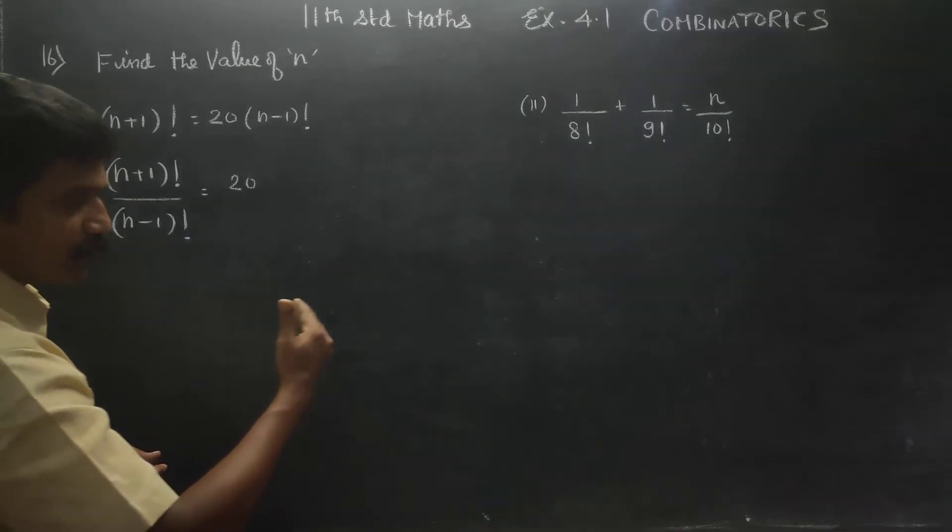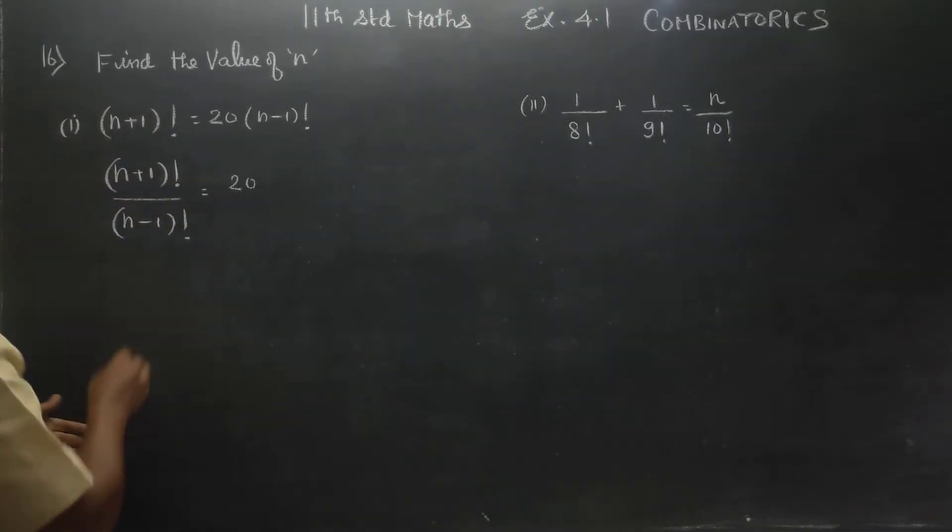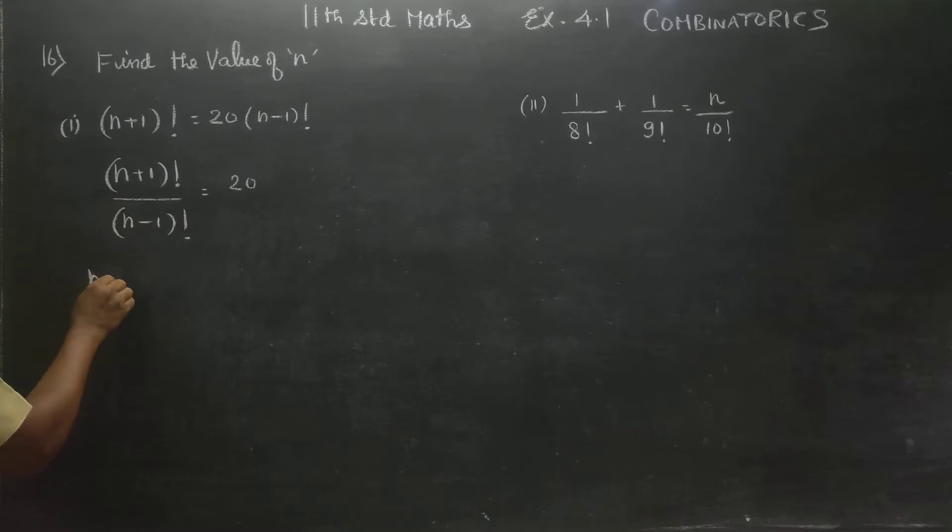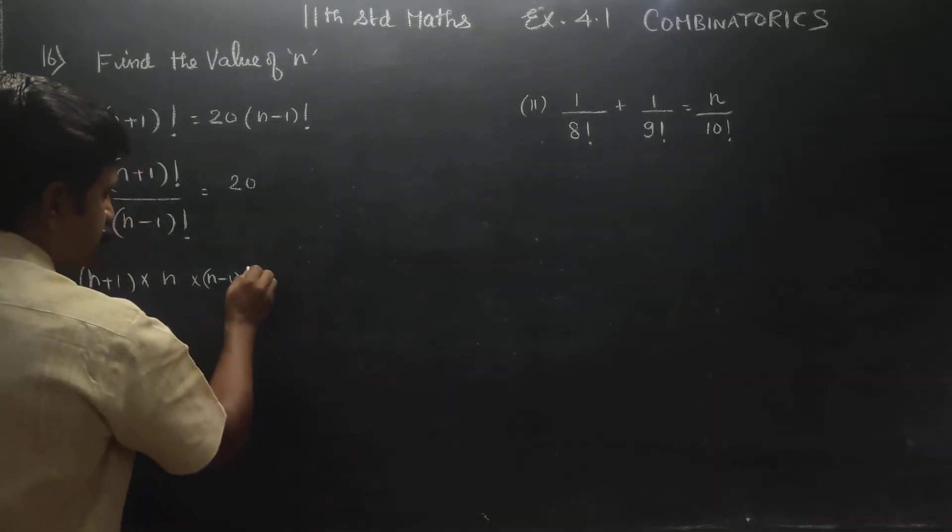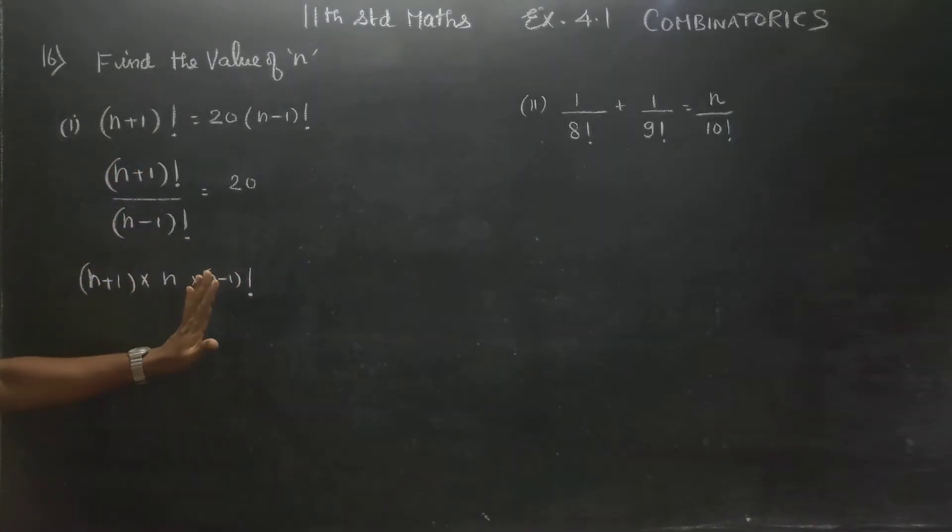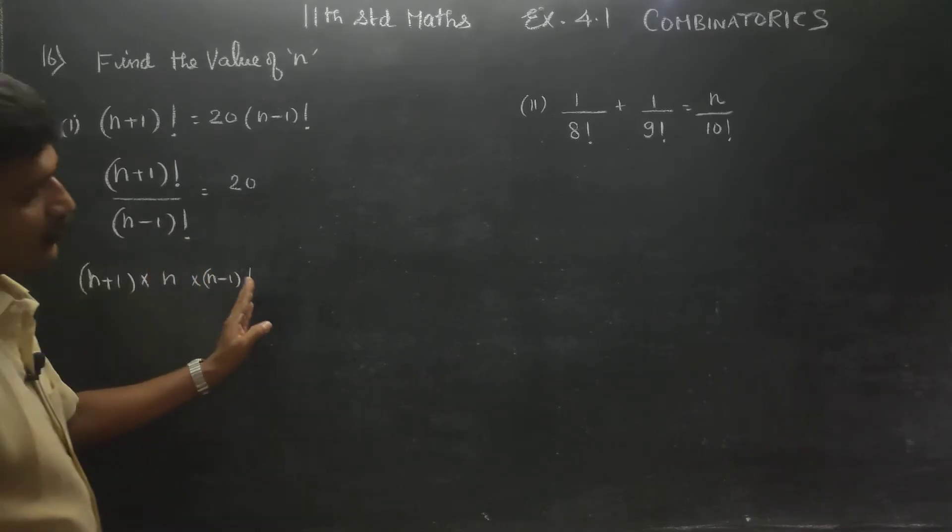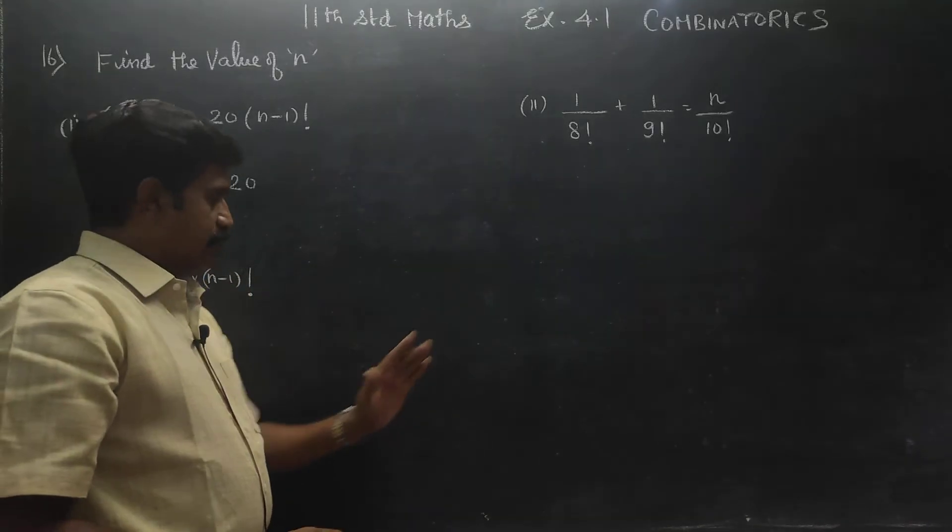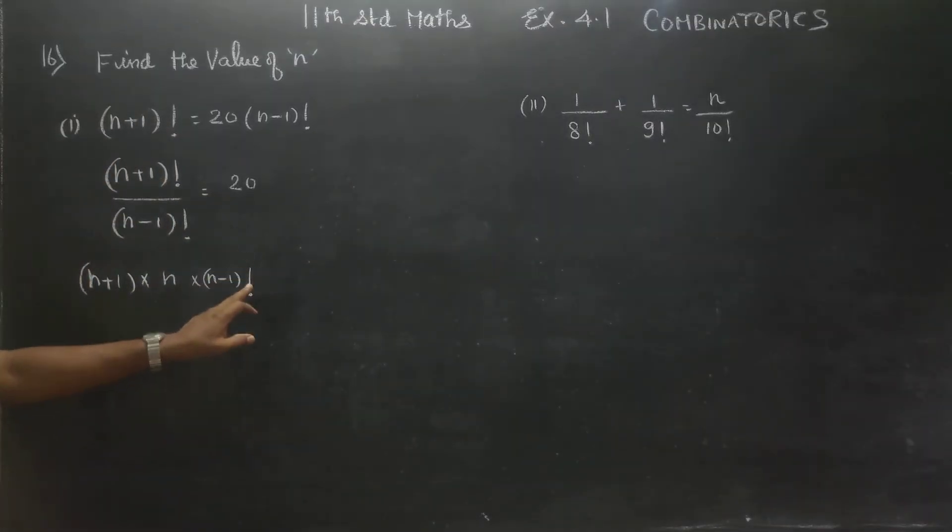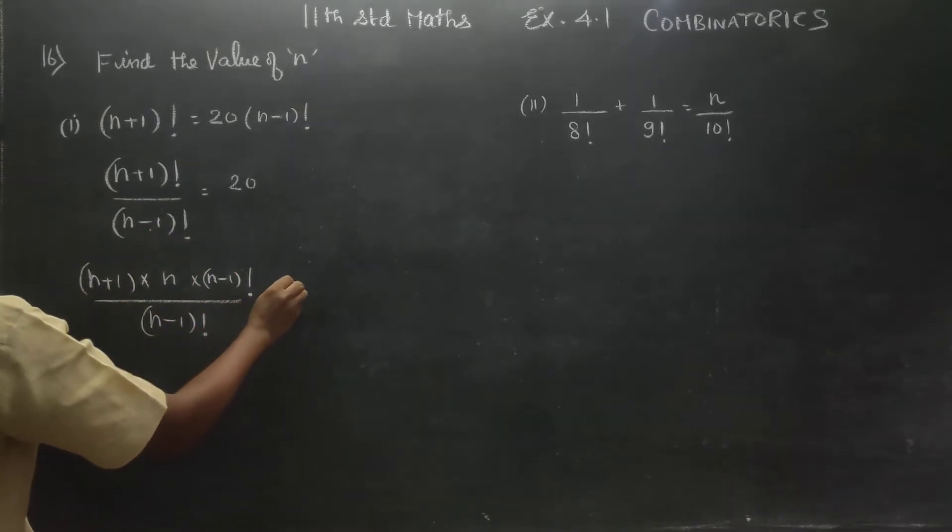N plus 1 factorial on the starting unit then, n plus 1. If you get n minus 1, I will stop. It's a factorial. By n minus 1 factorial is equal to 20.